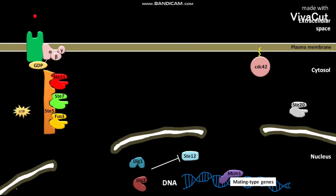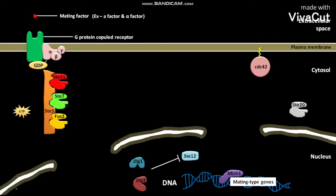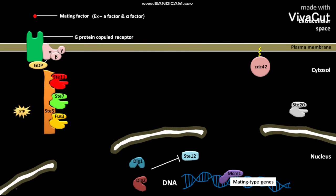The plasma membrane of Saccharomyces cerevisiae contains G-protein coupled receptors for mating factors like A-factor and Alpha-factor. These A-factor and Alpha-factor are a type of peptide pheromone. When the mating factor is not in a bound state to the G-protein coupled receptor, the unphosphorylated inactive DIG1 and DIG2 inhibit ST12.